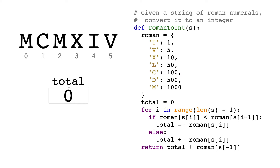In this video, we'll be going over the solution to LeetCode question number 13, Roman to Integer. In this question, we are given a Roman numeral as a string and must return the corresponding integer. For those of you who aren't familiar with Roman numerals, I'll do a quick recap.